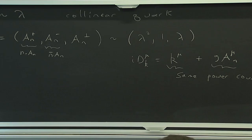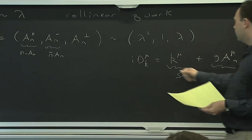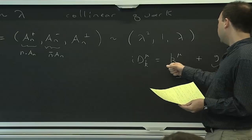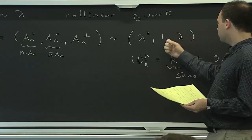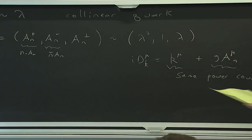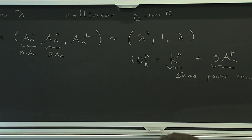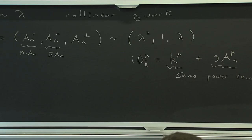If we didn't have the same power counting in the different components, then we would not have a gauge field corresponding to certain momenta. So another way of arguing that they should have the same power counting would have been directly from gauge invariance.